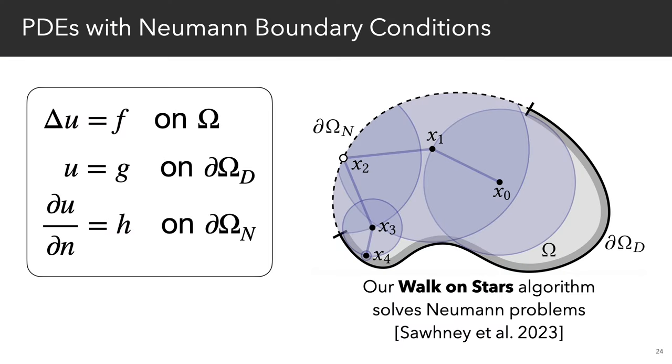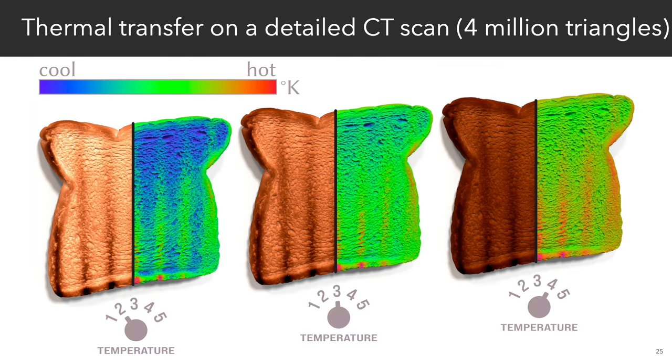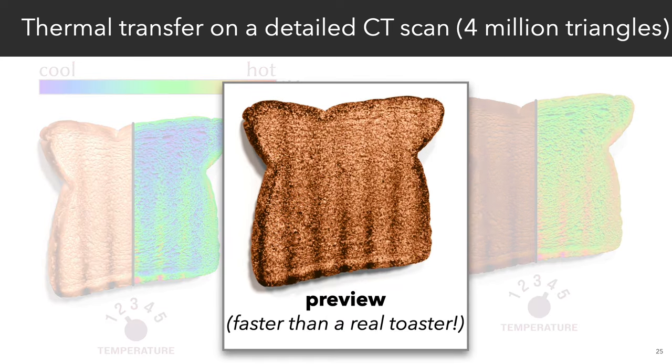We also show how to solve PDEs with Neumann conditions, demonstrating how physical simulation can be made more like rendering in terms of rapid feedback. So here we preview how a detailed CT scan of a piece of bread will brown under different conditions faster than a real toaster.